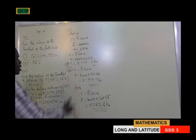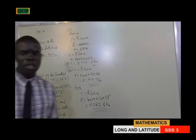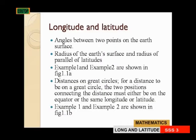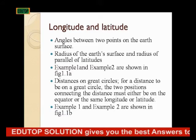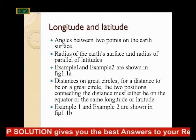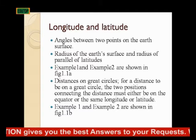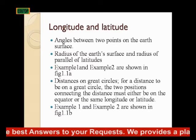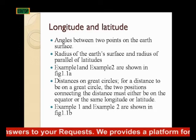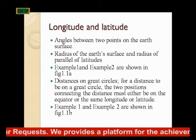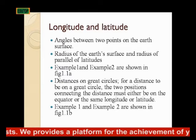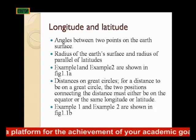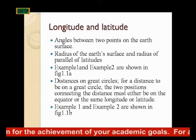The longitude is given to you in this respect — you don't need the longitude. Now, distance on great circles: for a distance to be on a great circle, the two positions connecting the distance must either be on the equator, on the same longitude, or the same latitude, as the case may be. Examples 1 and 2 are shown in figure 1.1b to justify that.